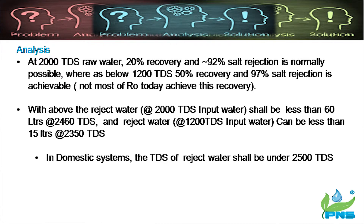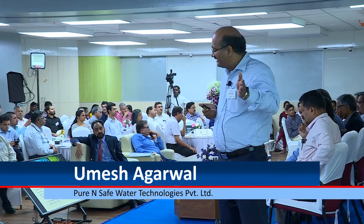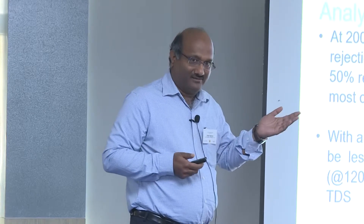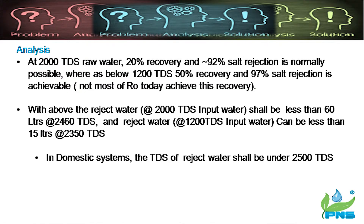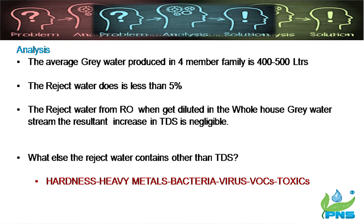With 2000 TDS input water, the reject water should be less than 2500 TDS. The idea that reject water has very high TDS is not true in domestic systems — it remains less than 2500 TDS. The average gray water produced in a four-member family is 400 to 500 liters, and reject water from the RO is less than five percent of that. When mixed with the gray water stream, the reject water gets diluted and the resultant TDS increase is negligible — only around 10 to 15 TDS.